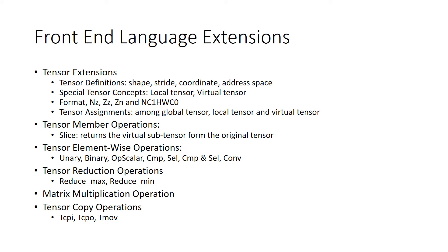We define the tensor element-wise operation — it includes unary, binary, tensor-scalar, compare, selection, and also conversion operations on the tensor. We also support tensor reduction operations such as reduce max and reduce mean. Most importantly, we support the matrix multiplication operation, which is a hardware-accelerated operation.